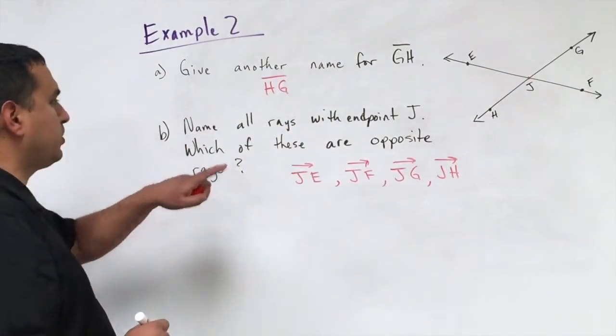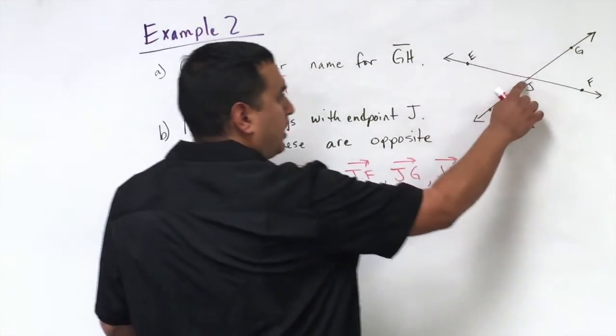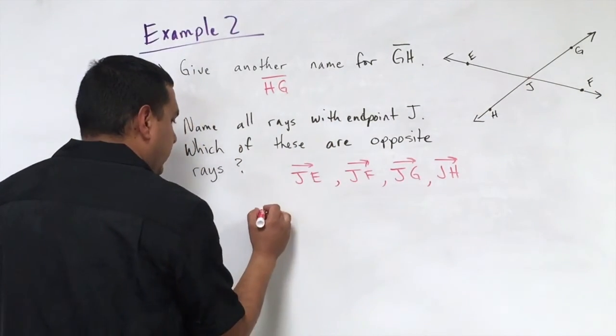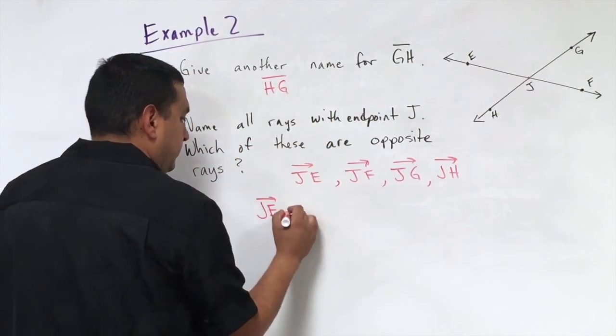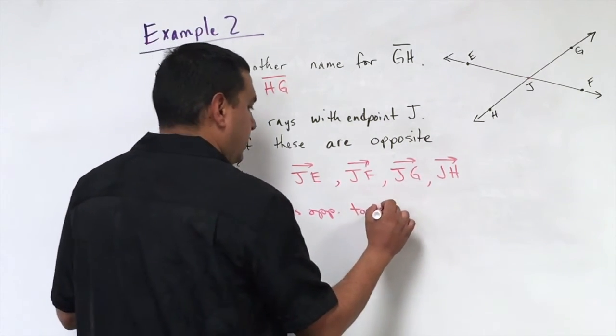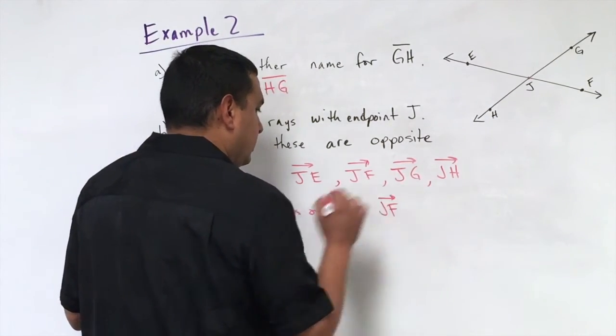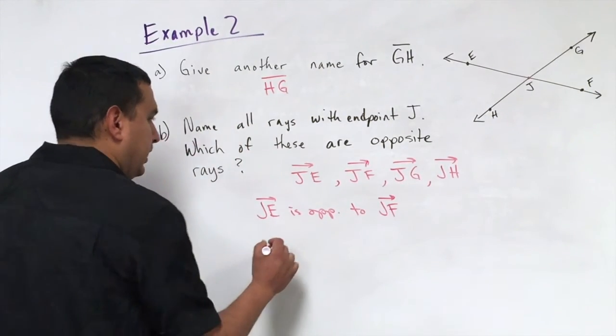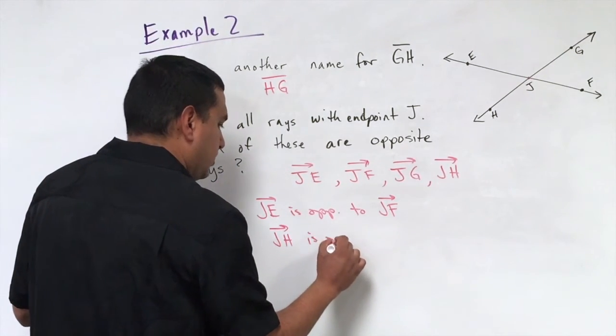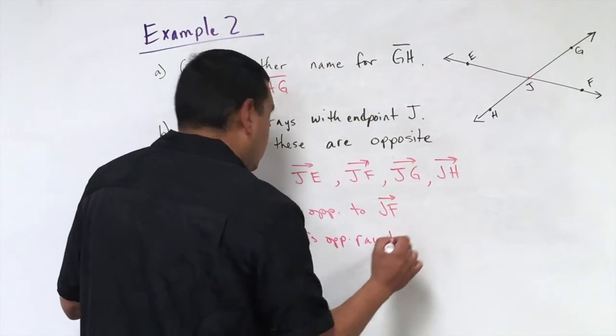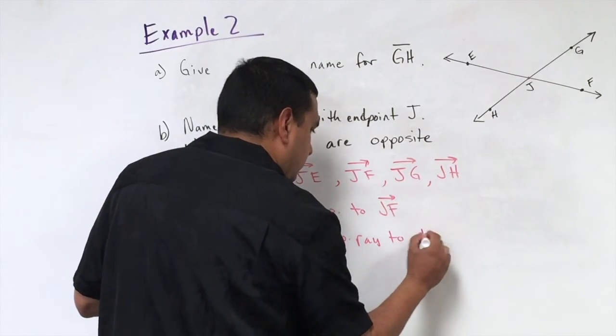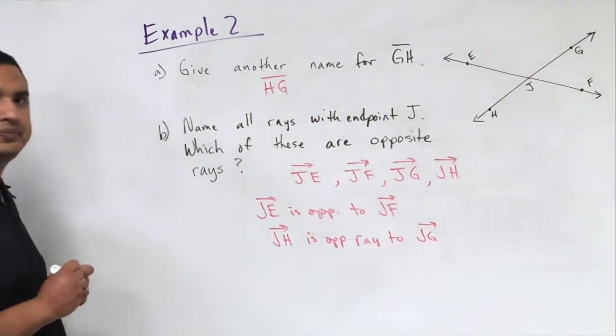Then it says which of these are opposite rays. So from J, E and F are on the same line. So those two, ray JE is opposite to ray JF. Those would be opposite rays. And then we would say JH is opposite ray of JG.